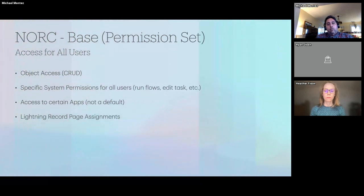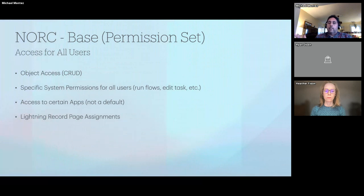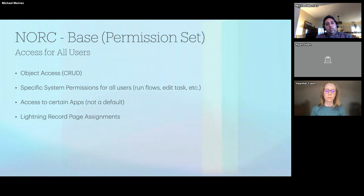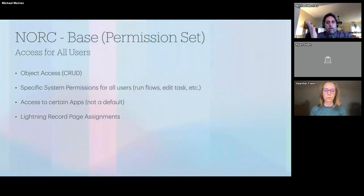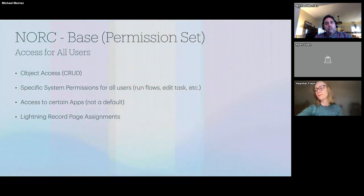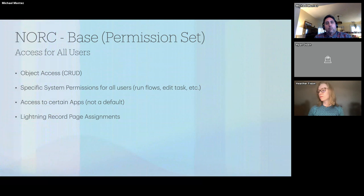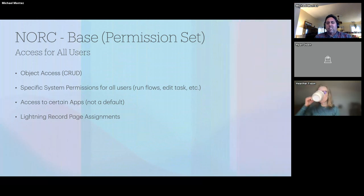Permission sets allow you to turn on system permissions — for example, all our users run flows, so we turned that on, along with edit tasks and other commonly needed permissions, in the NORC Base permission set. We also turned on access to our custom-built apps, which are sets of tabs for users' day-to-day work. We also use the profile permission set and record types for our Lightning record page assignments.